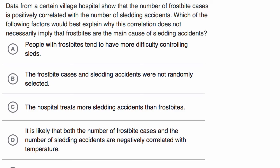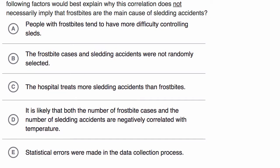What we have here is a correlation and causation question. Data from a certain village hospital show that the number of frostbite cases is positively correlated with the number of sledding accidents. Which of the following factors would best explain why this correlation does not necessarily imply that frostbites are the main cause of sledding accidents? They give us five choices, and we want to pick which best explains this. Pause this video and see if you can answer it on your own before we do it together.